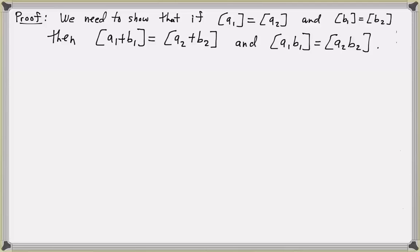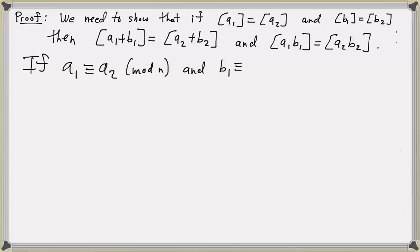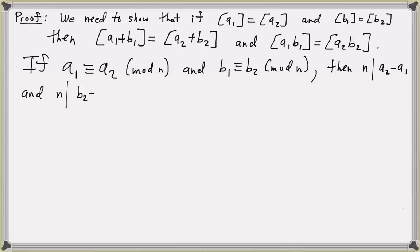Suppose the class of a1 equals the class of a2. That means a1 is congruent to a2 mod n. And we assume b1 is congruent to b2 mod n. So n divides a2 minus a1, and n divides b2 minus b1.